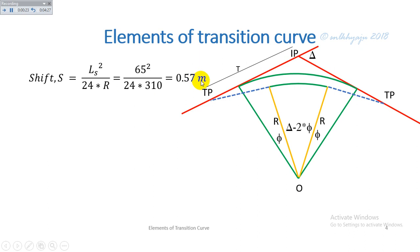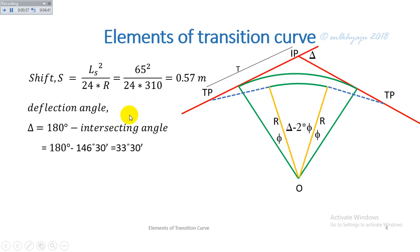So when the transition curve is introduced between the straight line and circular curve, the original circular curve is shifted inward by 0.57 meters. The deflection angle delta is given by 180° minus the intersecting angle. The intersecting angle is the interior angle, so the deflection angle is calculated as 33 degrees 30 minutes.